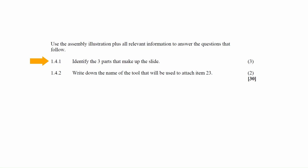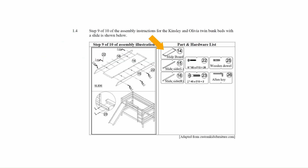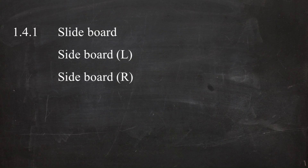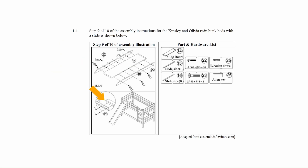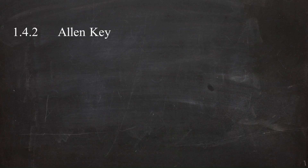In question 4.1.1 you have to identify three parts that make up the slide. The parts are the slide board, the slide side left, and the slide side right. In question 4.1.2 you have to write down the name of the tool that will be used to attach item 23. From the parts and hardware list, the tool that will be used to attach item 23 is called an Allen key.